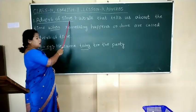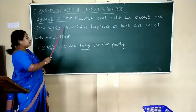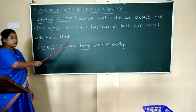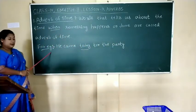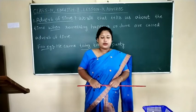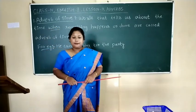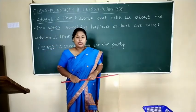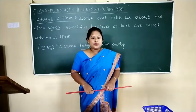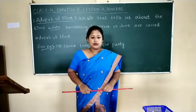Adverbs of time: words that tell us about the time when something happens or is done are called adverbs of time. For example, he came today for the party. In this sentence, today is an adverb. Here, today tells us when he came for the party.